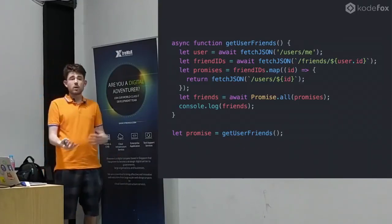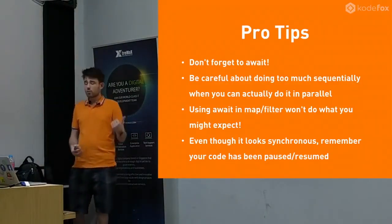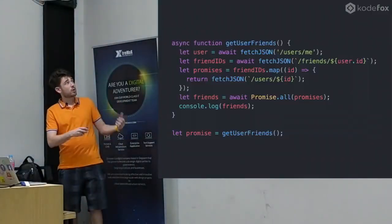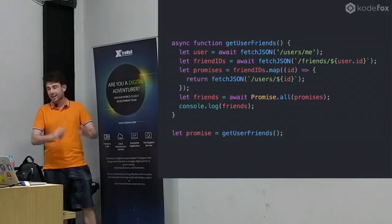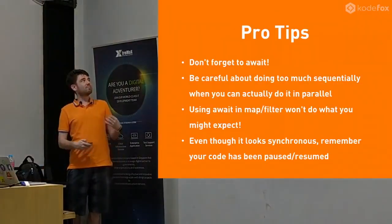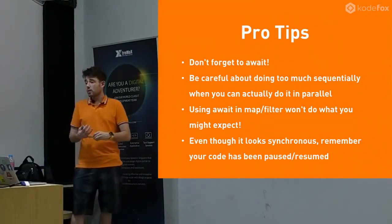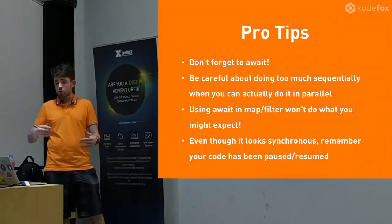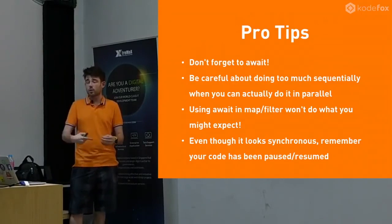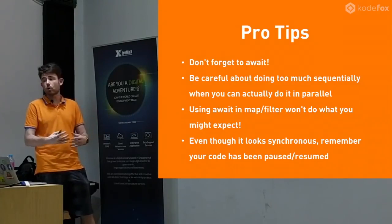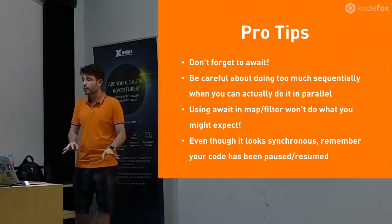You can await another async function because it's just promises. A few pro tips: don't forget to use your await. If you accidentally leave out this word because you're so excited that everything feels like normal programming again, it's not going to do what you think it does. Be careful about doing too many things in sequence if you can actually do them in parallel. Now that we have our for loops back that we love, it's tempting to put an await inside a for loop - but remember that will pause that for loop every single iteration. Don't do too much in sequence if you can do it in parallel.